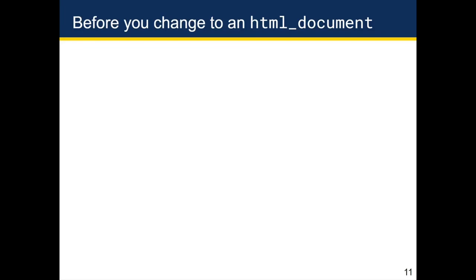Before you convert your code from an R Notebook into an R Markdown document, there are a couple of things you have to check. The first is to make sure your code is reproducible. When you were working with an R Notebook, the .nb.html file was being generated automatically every time you saved it or pressed the preview button in RStudio.